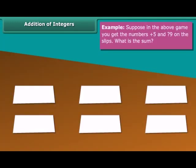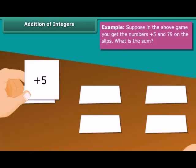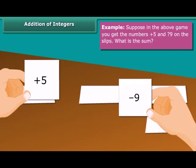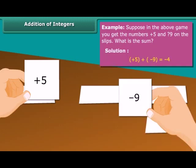Addition of two integers. Example: Suppose in the above game, you get the numbers plus five and minus nine on the slips. What is the sum? Plus five plus minus nine which is equal to minus four.